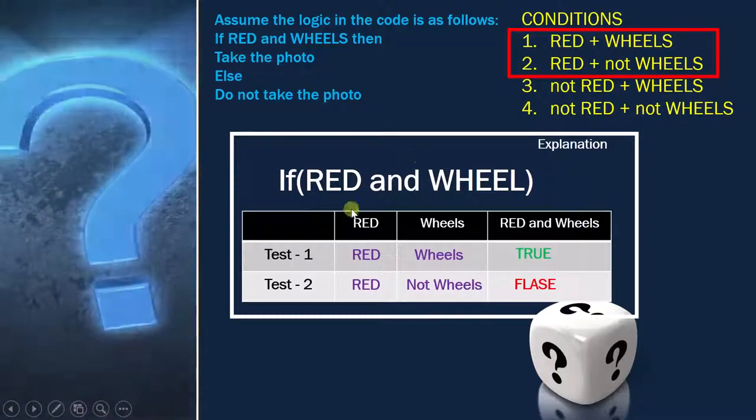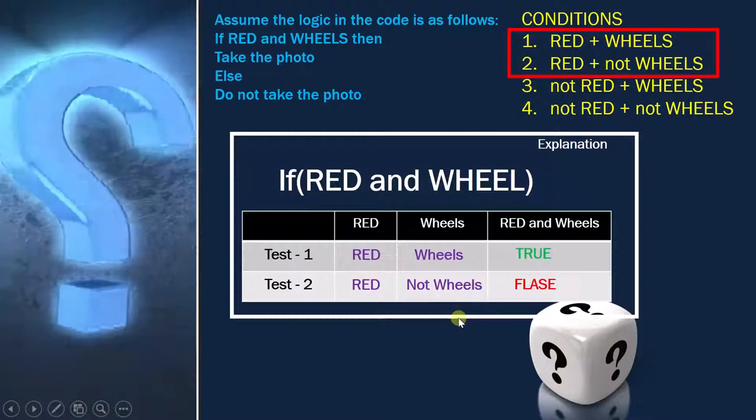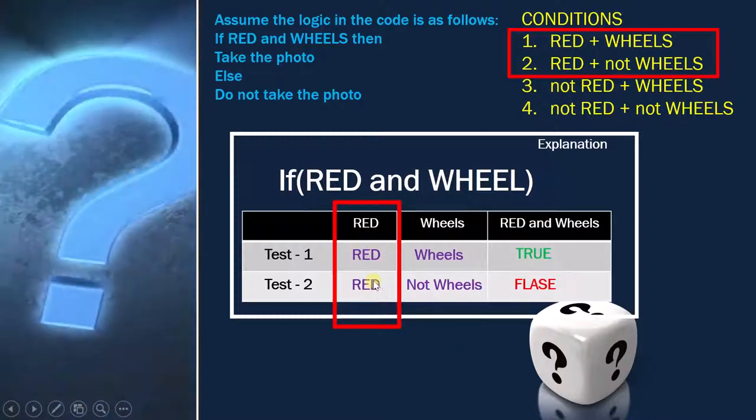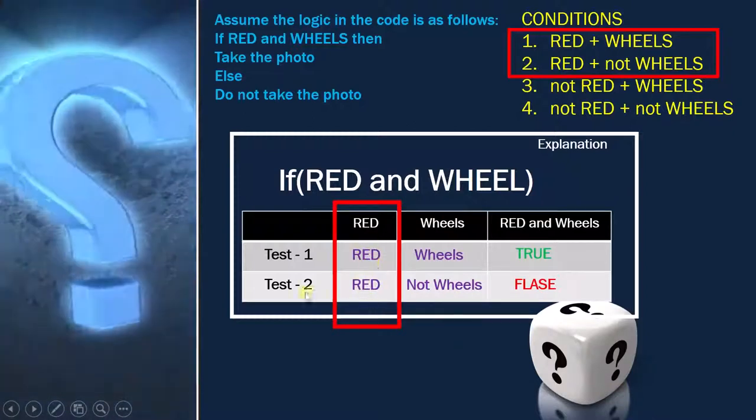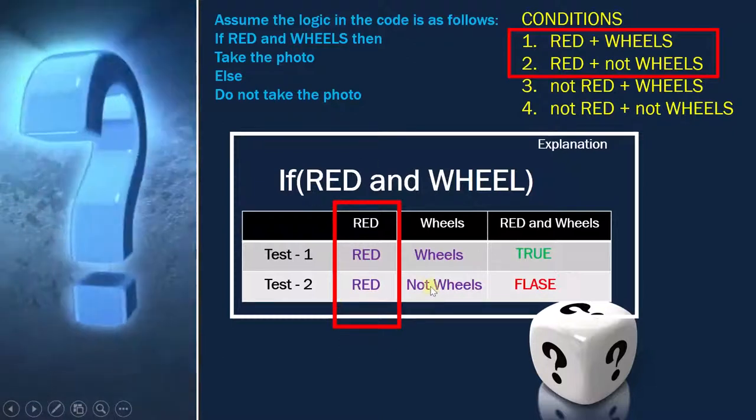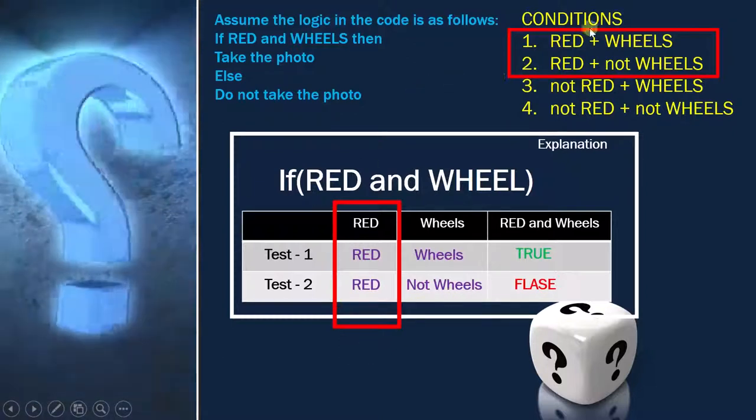But whether we have achieved 100% condition coverage? No, because this is red and this is also red. So both are the same, both are true, and that is the reason we could not achieve 100% condition coverage. So 1 and 2 is not our option.